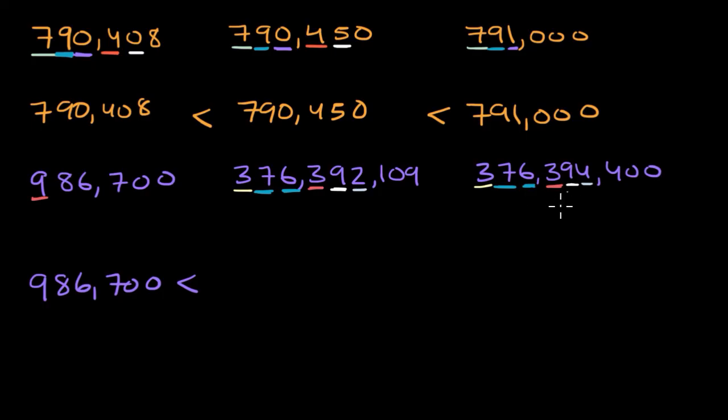So this is going to be, this number is less than this number, 376,392,109, which is less than this number, 376,394,400, and we're done.